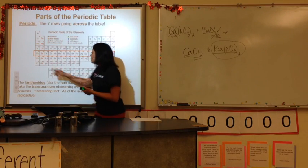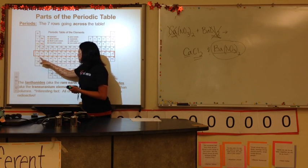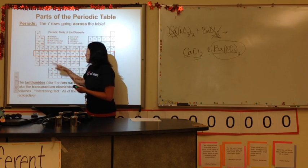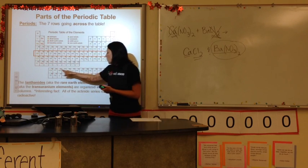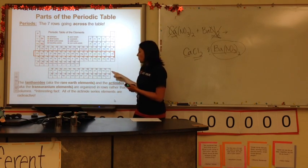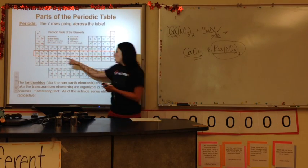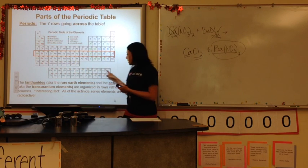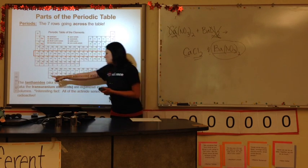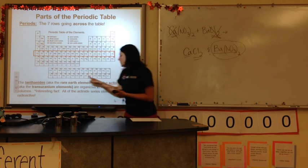So it goes 55, 56, 57, 72. What happens? This entire row right here goes there. So these are also part of period six, and these are part of period seven.